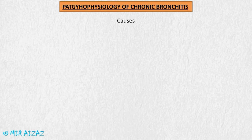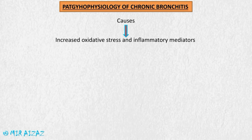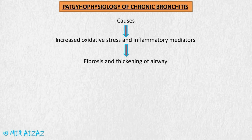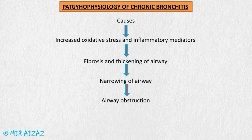Due to the diminished activity of the cilia, there is clogging of the airways due to debris and inflammation. In the pathophysiology of chronic bronchitis, the causes lead to increased oxidative stress and inflammatory mediators which damage the tissue, causing fibrosis and thickening of the airways. This leads to narrowing of the inflamed airways, resulting in airway obstruction and ultimately chronic bronchitis.